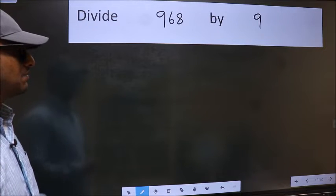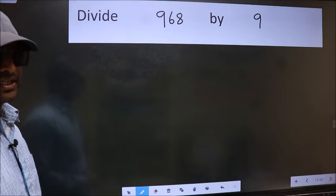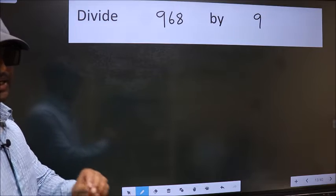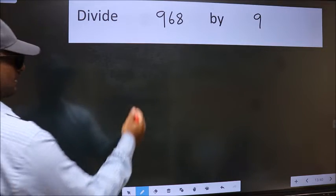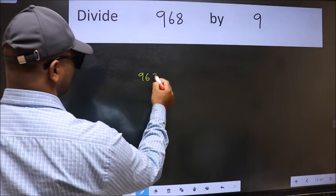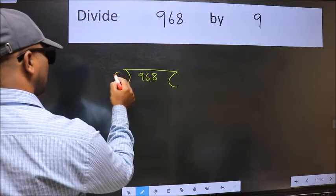Divide 968 by 9. To do this division, we should frame it in this way. 968 here and 9 here.